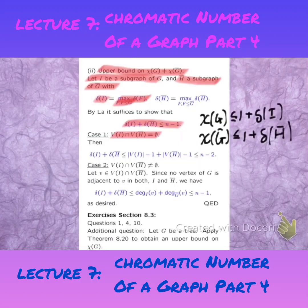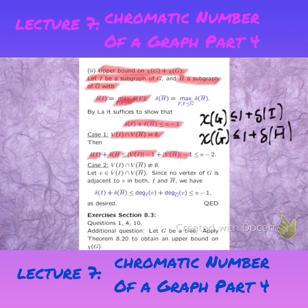We have two cases. The first case is where the vertex sets of I and H-bar don't share any vertices. Then delta of I plus delta of H-bar is at most the order of I minus 1 plus the order of H-bar minus 1. Because they are two disjoint graphs, they both add up to N at most. So the two terms add up to at most N minus 2.